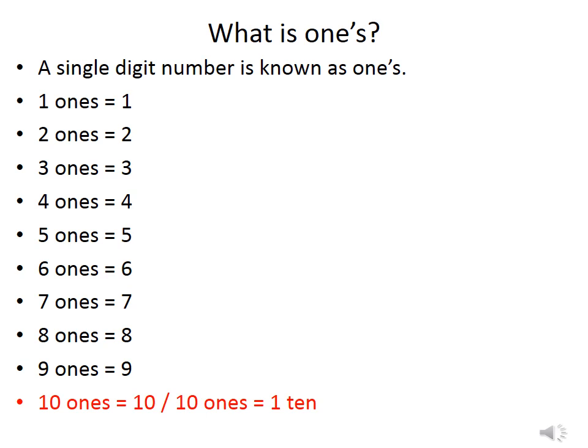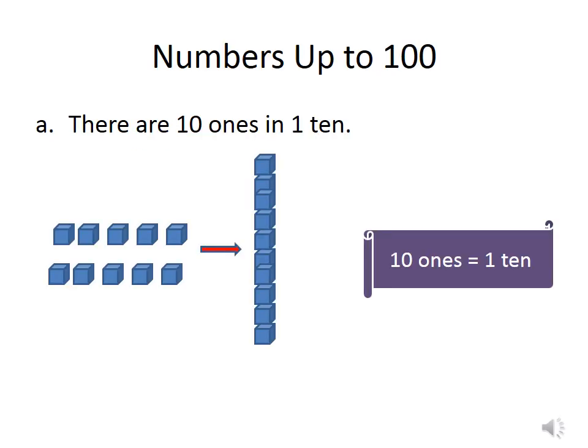1 ones is equal to 1, 2 ones is equal to 2, 3 ones is equal to 3 and so on. As soon as we write 10 ones, we can also write it as 1 ten. When we take 10 individual cubes and we combine it together, we can also say it as 1 ten.